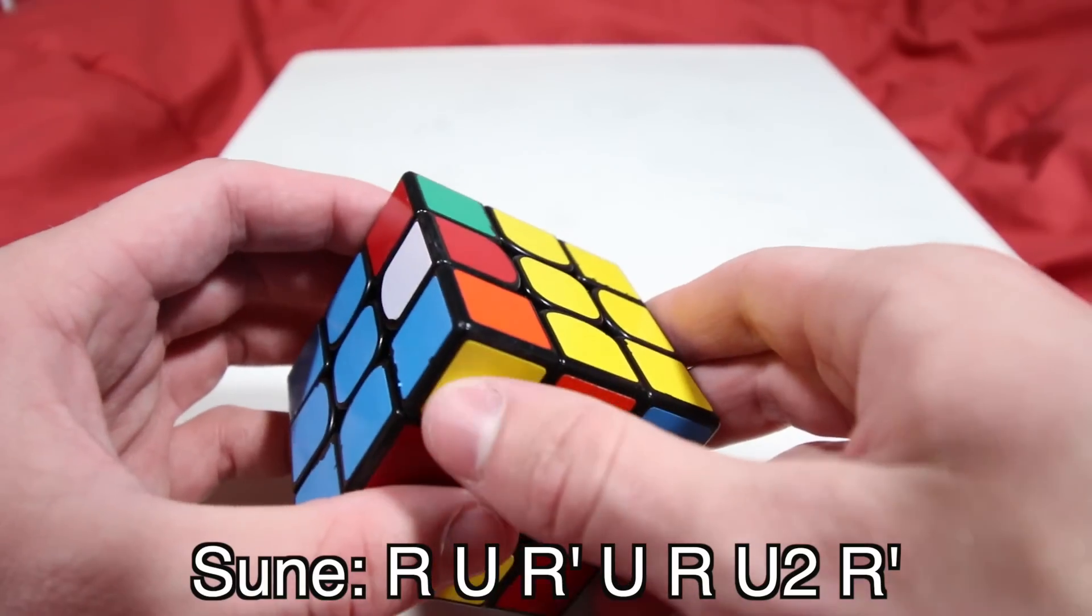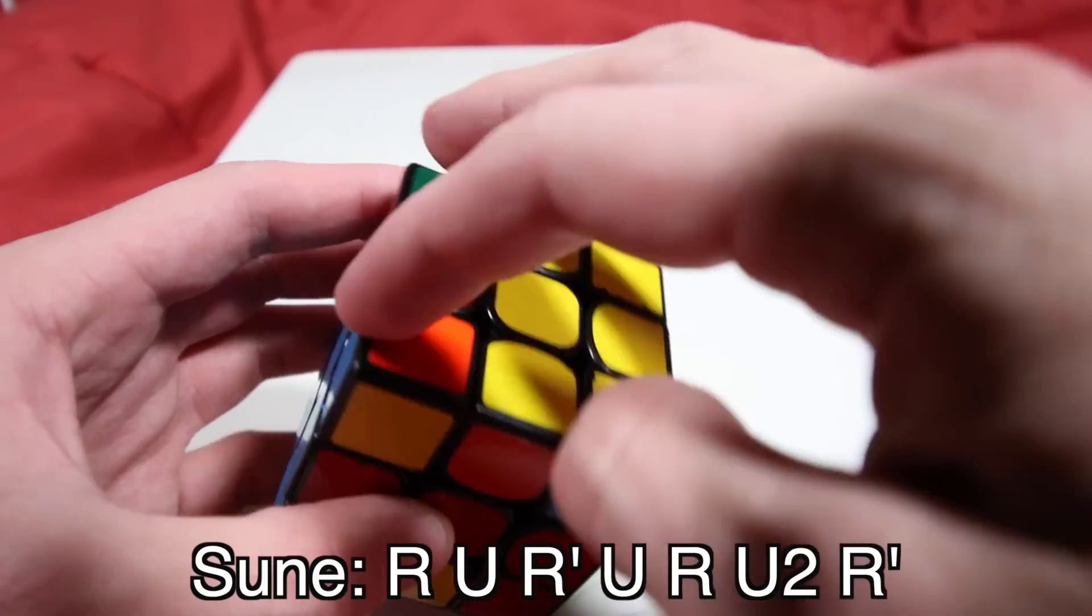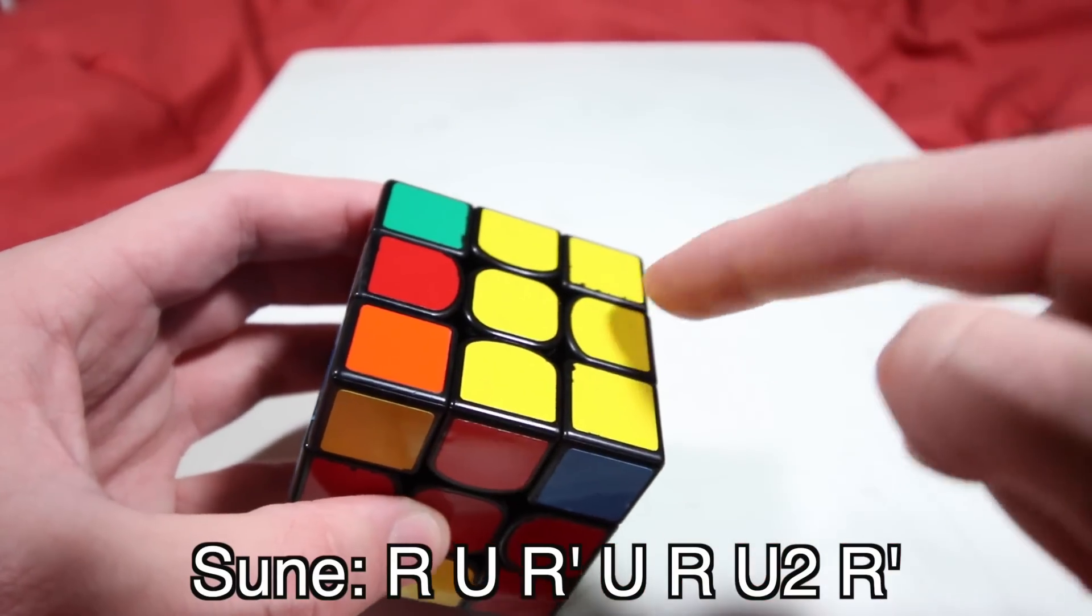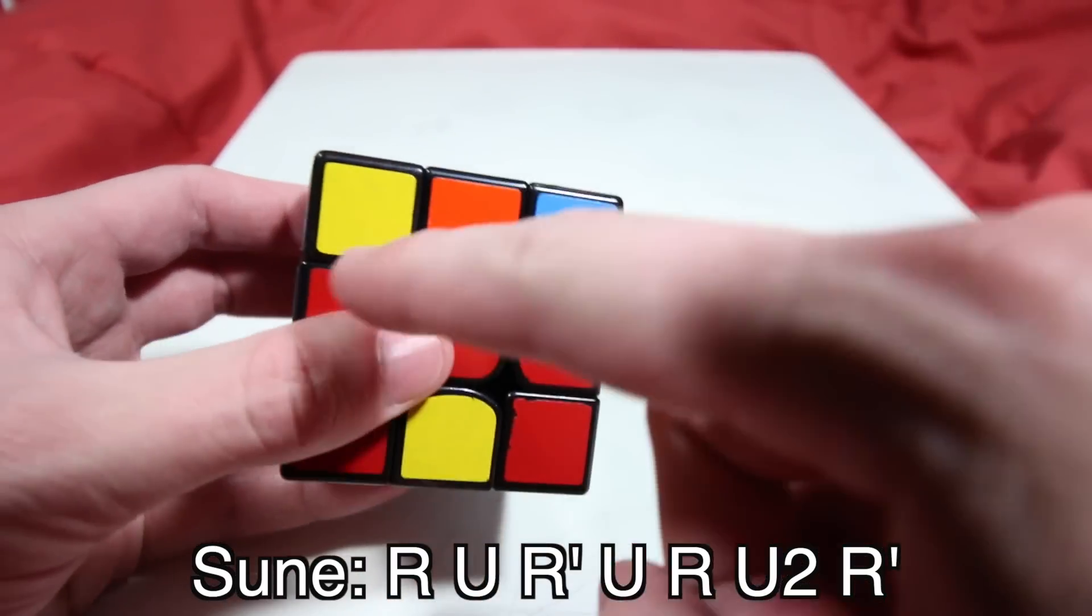The next step is to orient corners, and we'll use a Sune algorithm for this. So you just check how many already have yellow facing up, in this case we have two. If it's anything but one, you put one in the front left facing you and perform the Sune algorithm.